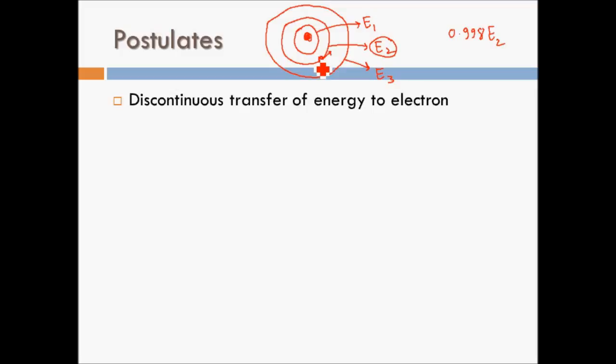Whether energy is being given to the electron or radiated out by the electron, it is always in discontinuous form. You can say that even the energy according to Neil Bohr is quantized — the energy of the electron takes only some discrete values.